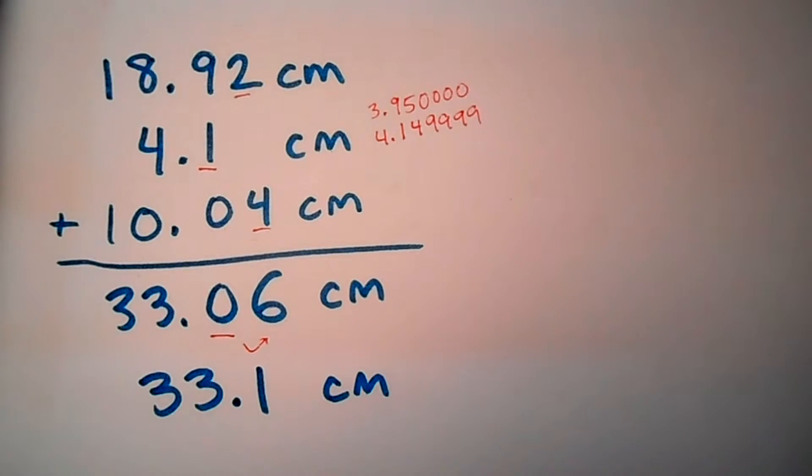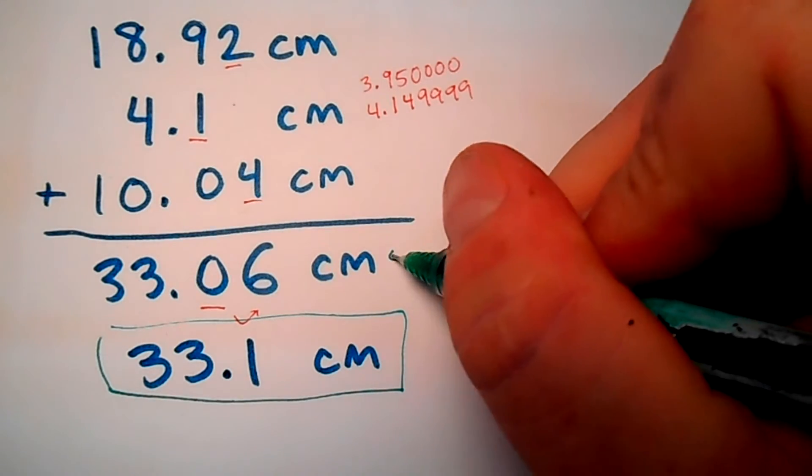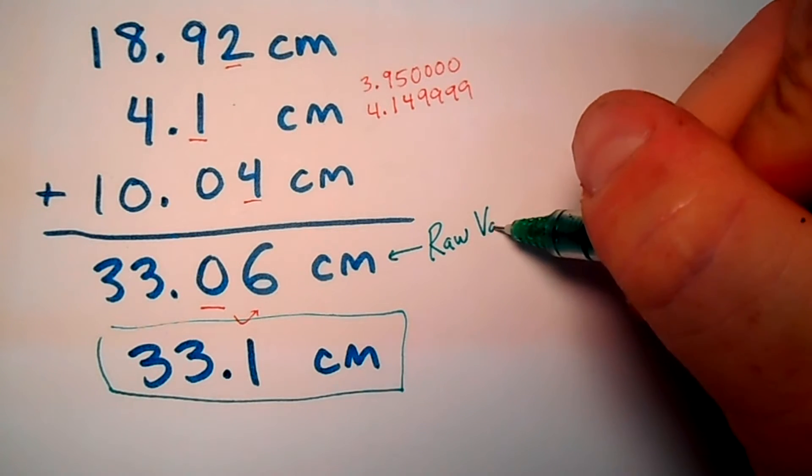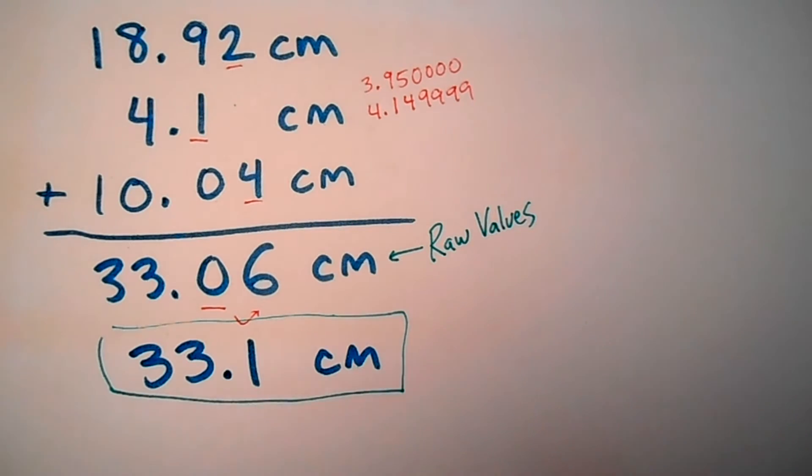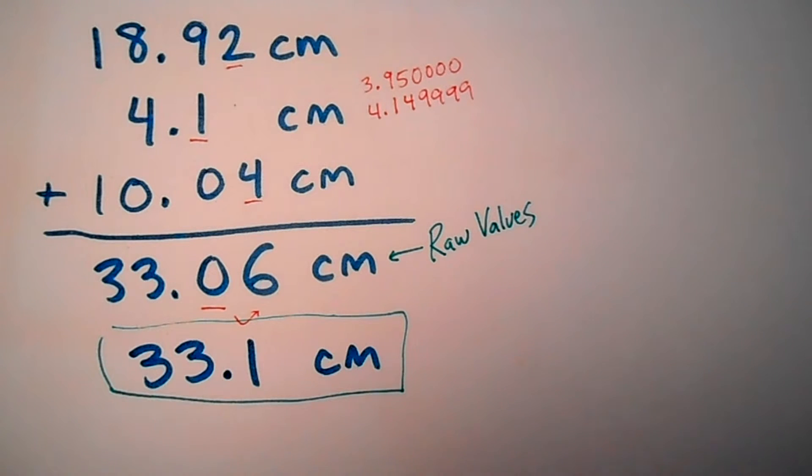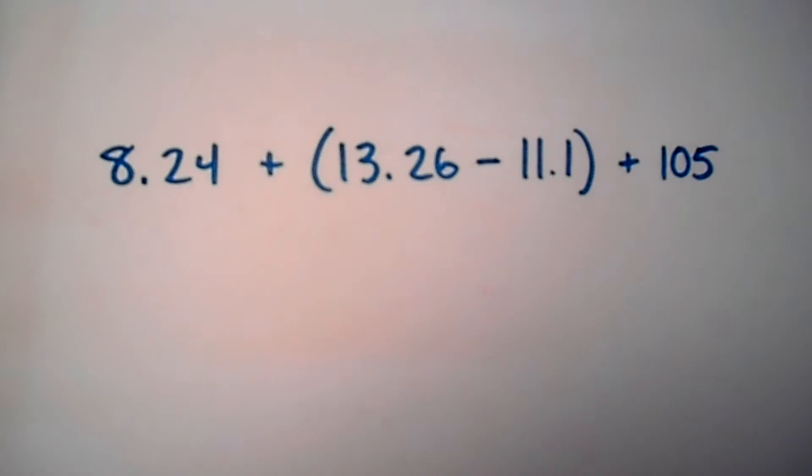By the way, when it's the non-rounded answer, I like to call these the raw values. The raw number, the unrounded number. So let's try an example problem. We've got 8.24 + (13.26 - 11.1) + 105.